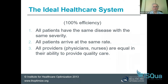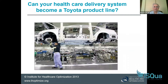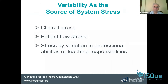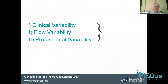How would the ideal healthcare system look? Imagine all patients have the same disease with the same severity, arriving at the same rate — every 15 minutes a new patient. Moreover, imagine all providers and nurses are equal in their brilliant ability to provide quality care. That would be 100% efficiency — a Toyota production line. But we are not there and we are not going to be there. Why? We have different types of stresses.